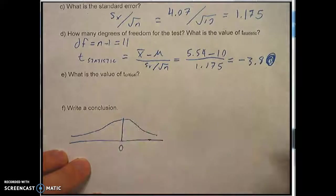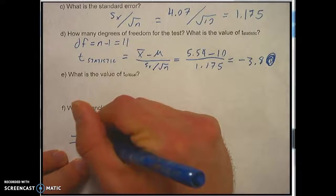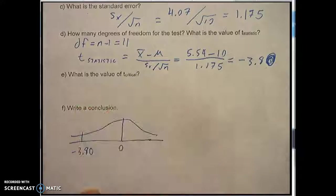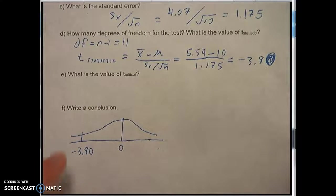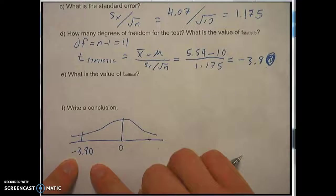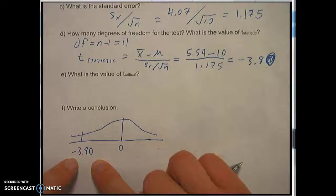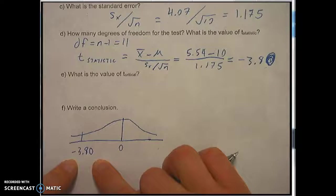Here's a t curve. There's 0. Here is negative 3.80. The question is is this value in the critical region?